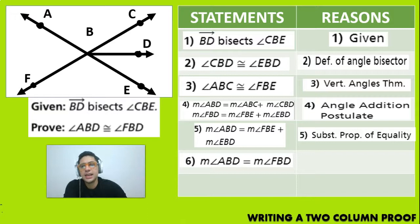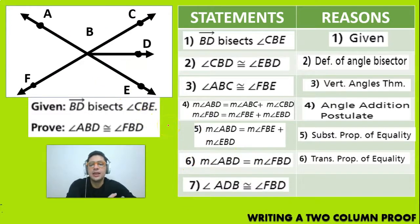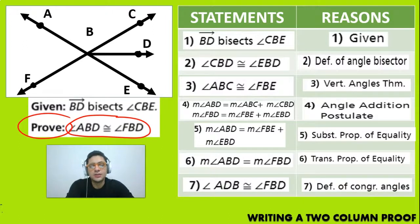Now, we know that because of that, the angle ABD, which is this long angle, is going to be congruent or is going to be equal. First, the measurements are going to be equal to the angle FBE because of the transitive property of equality. And now that we know that the measurements are equal, we can conclude that the angles are going to be congruent, which is what we wanted to prove. Right. So we wanted to prove that those two angles were congruent because of the definition of congruent angles.